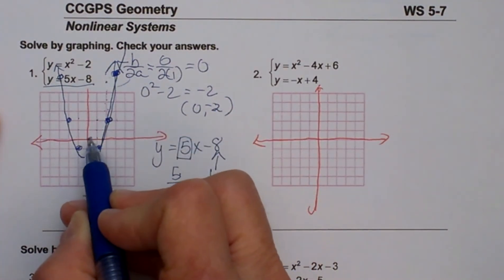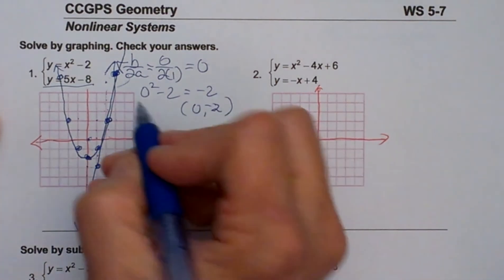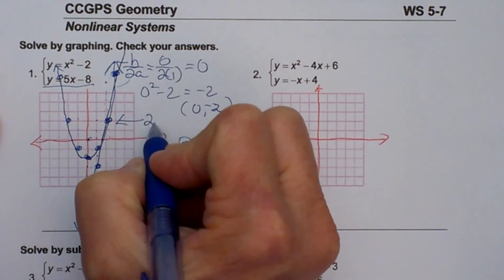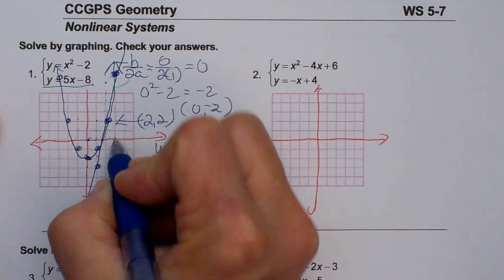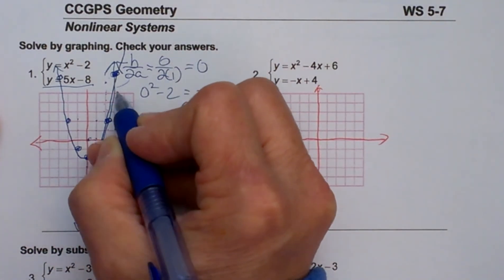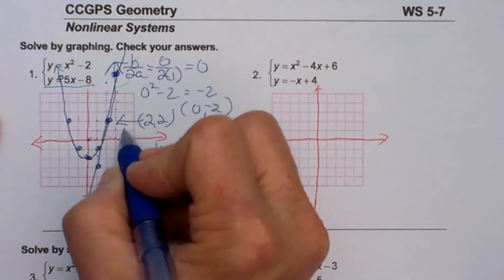This one is at, from 0, 0, I go over 1, 2, up 2. So this point is 2, 2, and then this one is 1, 2, 3, 1, 2, 3, 4, 5, 6, 7, 3, 7.